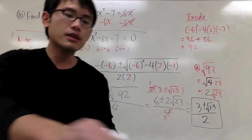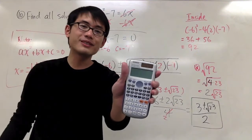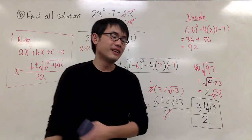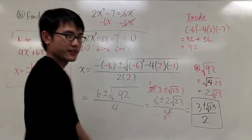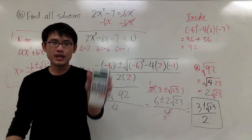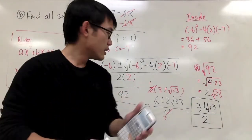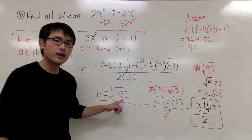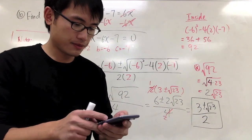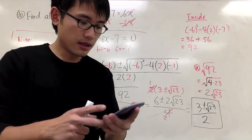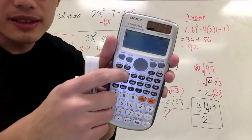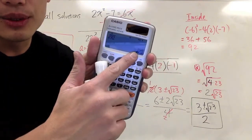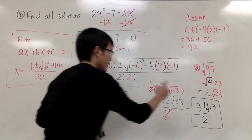I'd like to show how to use a calculator to check the answer — not to do the question, but to verify after finishing all computation. One thing: for square root of 92, this is the square root button. I can just hit square root of 92 and get 2 square root of 23 right away, which matches what we got.